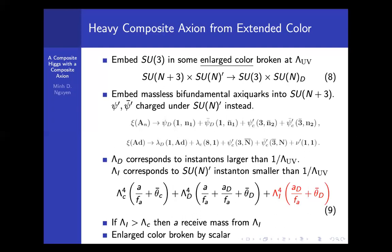One drawback of this model is the enlarged color has to be broken by a scalar. Even though we have a composite axion model, we still have to introduce a scalar to break the enlarged color.